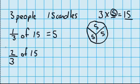But this time, I'm not interested in how many candles one person gets. I'm interested in how many candles two people get. So I'm saying, what is 2 thirds of 15? Well, up here we worked out that 1 third is 5. So 2 thirds must be twice as much. So the answer must be 10.